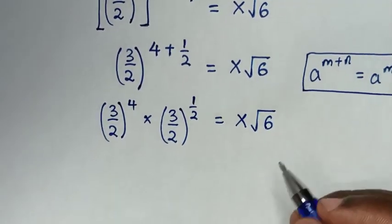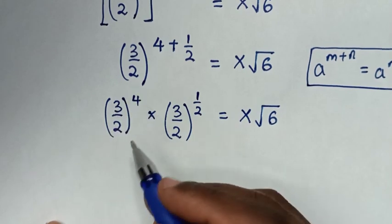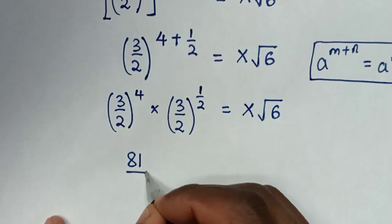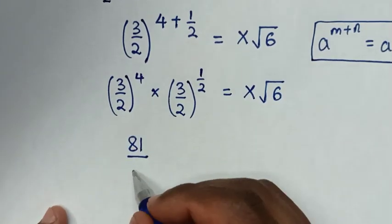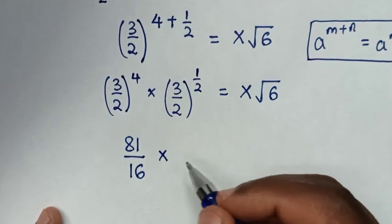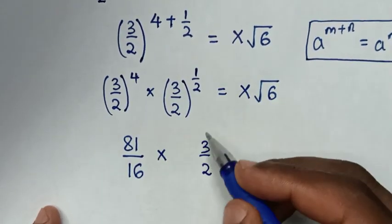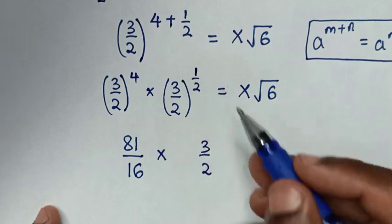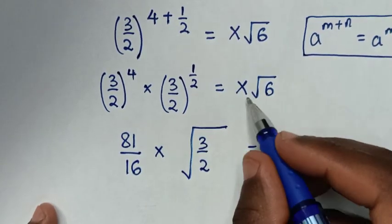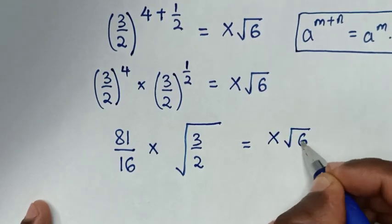Then in the next step, we take this power of 4 inside the bracket, so it will be 3 power of 4 which is 81, over 2 power of 4 which is 16. Then times (3 over 2) — this power of 1 half is the same as square root — equal to x square root of 6.